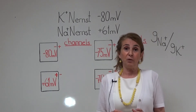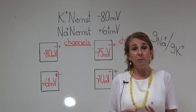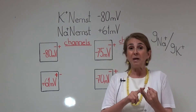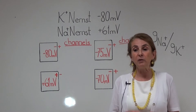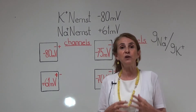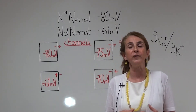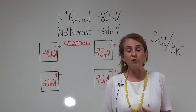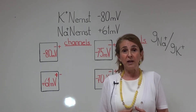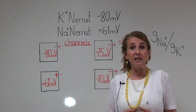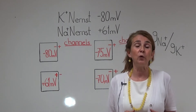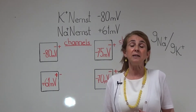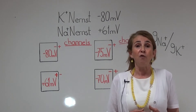Membrane potentials are especially important for heart, muscle, and nerve cells because the functioning of these cells depends on the electrical potentials — the membrane potentials. The resting membrane potentials in these three types of cells have been recorded to be between minus 60 and minus 90 mV.